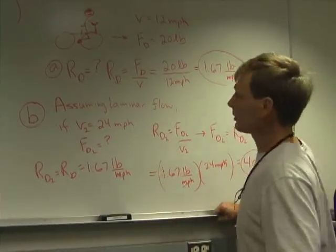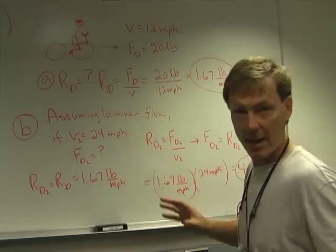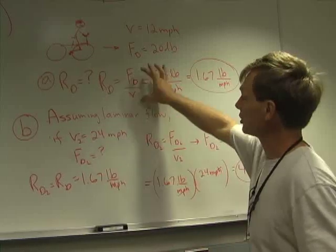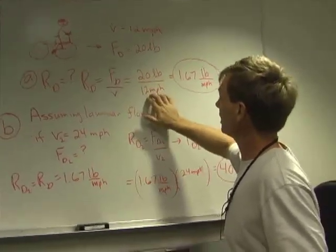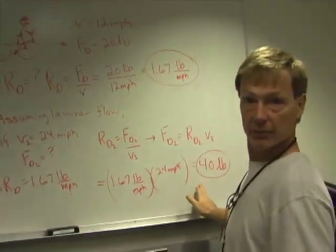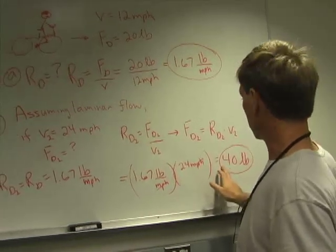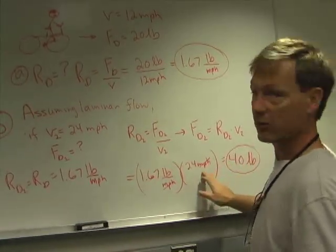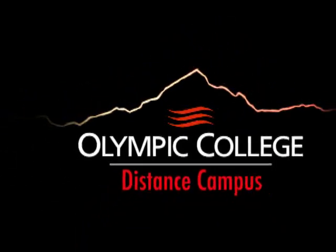Which makes sense. I double the velocity from 12 to 24 miles per hour. It's in a laminar regime, so that ratio, drag force to velocity, stays the same. So if I double the speed, I'll double the drag force to 40 pounds. And make sure you get the units you want. If I'm looking for drag force and I get something, if I get miles per hour, I screwed up. So that's drag resistance.